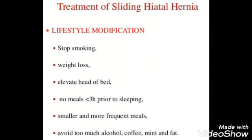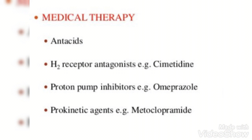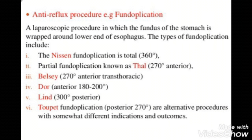For treatment of sliding hiatal hernia, the patient is recommended to quit smoking, reduce weight, elevate the head of the bed, and take smaller and more frequent meals. Avoid too much spicy food, alcohol, and coffee. Medical treatment includes antacids, H2 receptor antagonists, proton pump inhibitors like omeprazole, and prokinetic agents like metoclopramide.